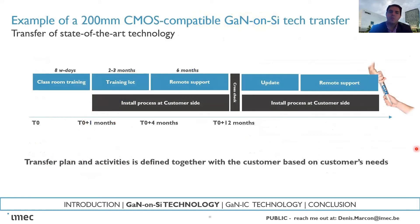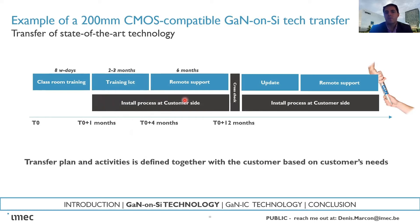Here is an example of how we can transfer iMac technology to your 8-inch line. We start with a classroom training where we share our overall knowledge. Then we have a training lot where we go through the lot module by module, sharing all the know-how in detail, while you begin installing the processing at your site. Afterwards we provide support, and with good commitment from your side, within one year you will have first GaN-on-silicon wafers coming out of your line. We then perform cross-checks to debug the processing and provide updates. The transfer plan is defined together based on your needs.